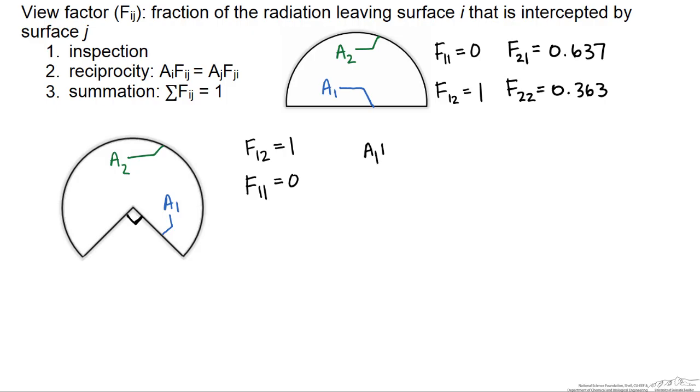Now again we use the reciprocity rule. A one times F one two equals A two times F two one. Since we're looking for F two one, it's again going to equal A one over A two.